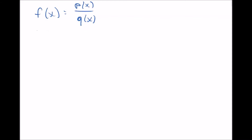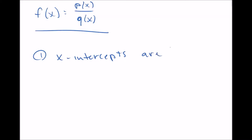There are three things you need to know about this equation. The first thing is that the x-intercepts are the zeros of p of x. So what you do is set the top part equal to zero, calculate the zeros — the zeros of the top, p of x, are the x-intercepts.